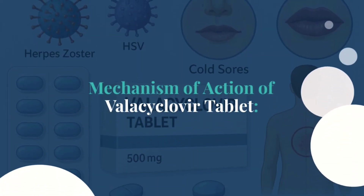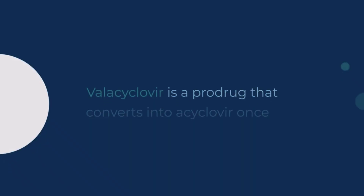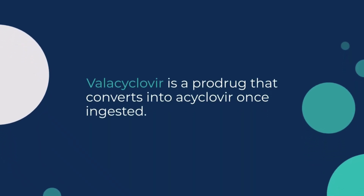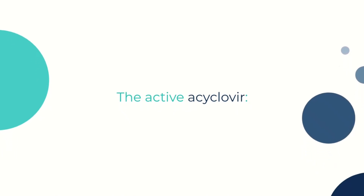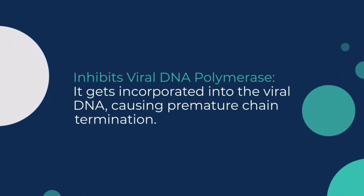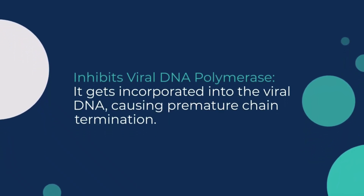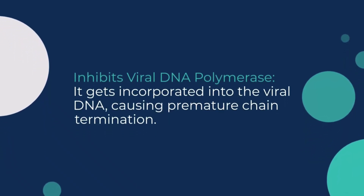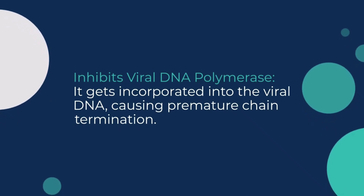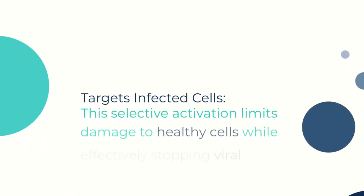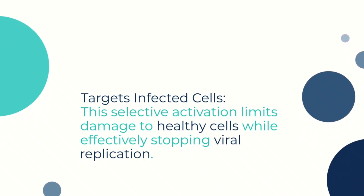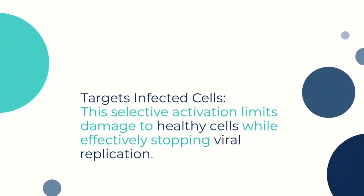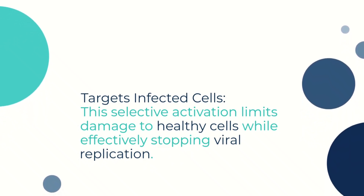Mechanism of action of valacyclovir tablet. Valacyclovir is a pro-drug that converts into acyclovir once ingested. The active acyclovir inhibits viral DNA polymerase by incorporating into viral DNA and causing premature chain termination. This selective activation targets infected cells, limits damage to healthy cells, and effectively stops viral replication.